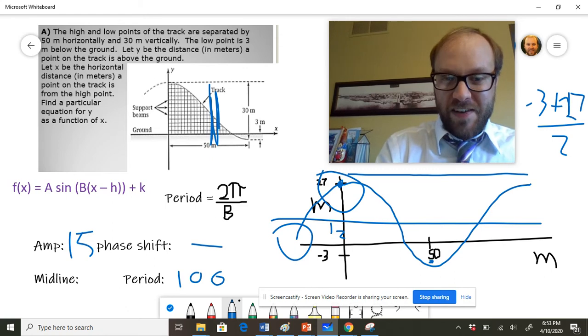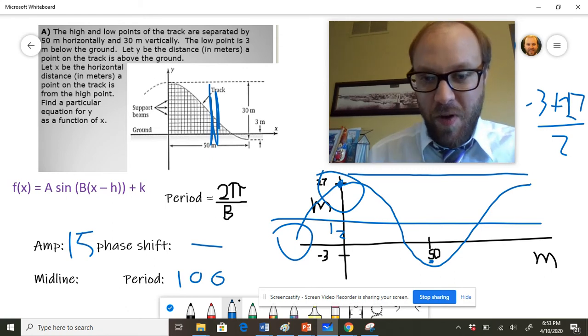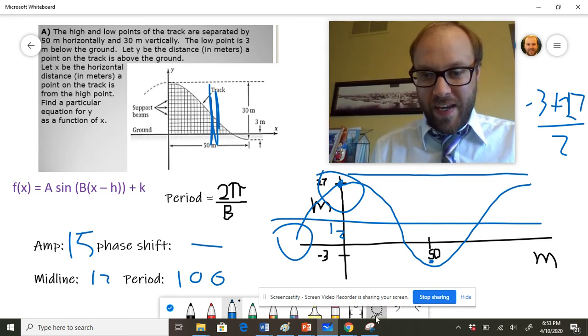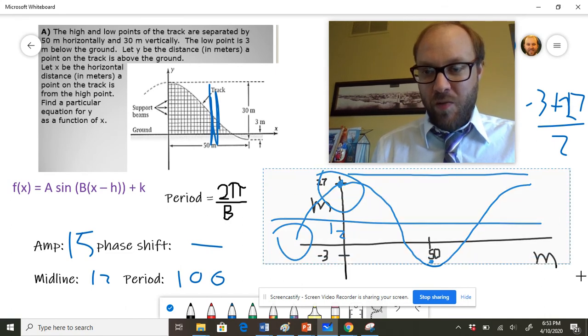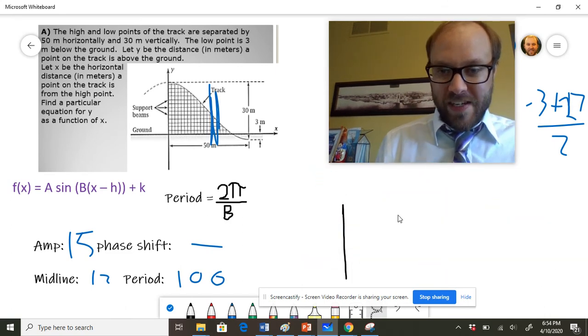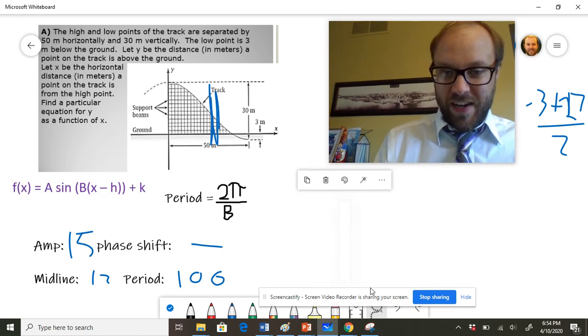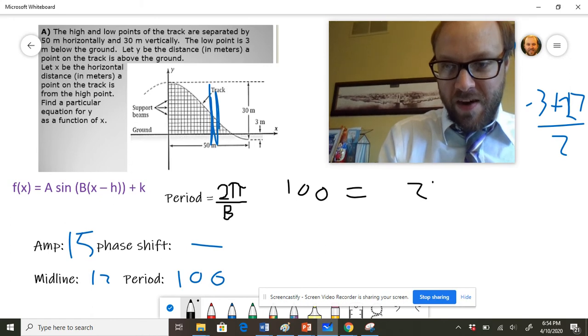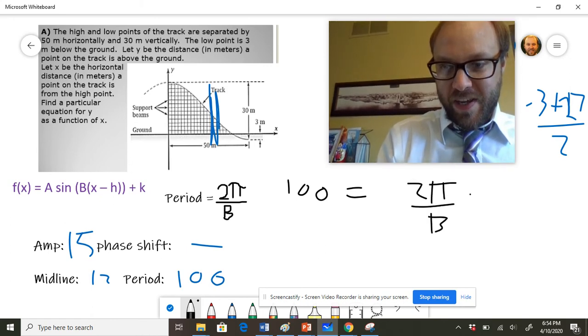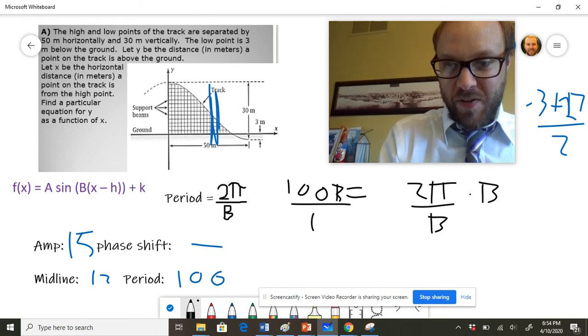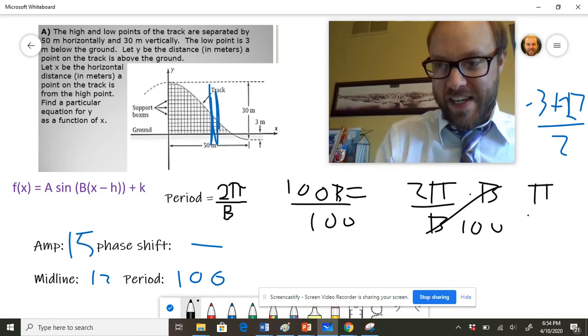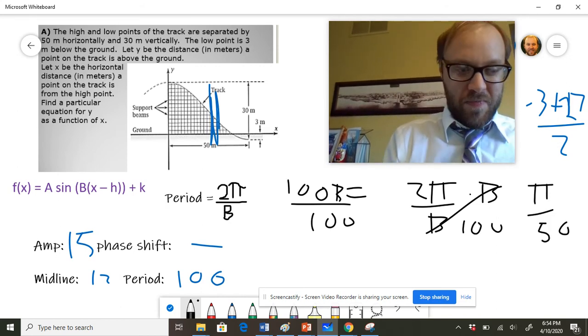And so you've got 15 from negative 3 up to the 12, and then you've got 15 from the 12 up to the 27. So the midline is going to be at 12. And now we can put this whole thing together and we can write our equation. Of course, the one other thing that we're going to need to do here is we're going to need to write the equation of the period. Remember, we want the period to be 100, and 100 equals 2π over B if I'm working in radians. Multiply both sides by B, divide both sides by 100, and we'll end up with π over 50 being that B value.